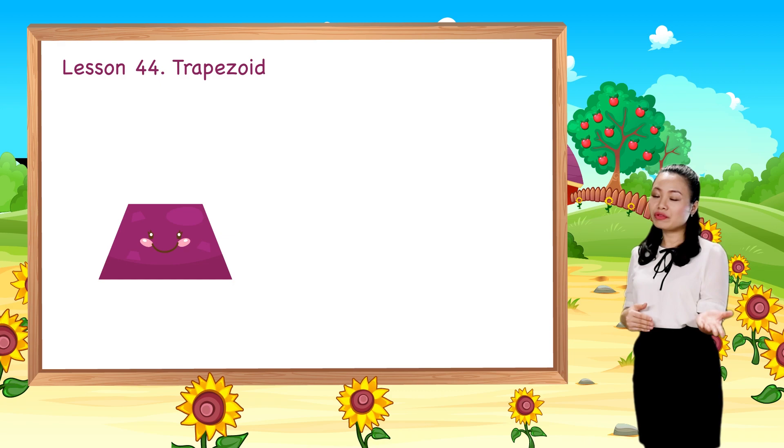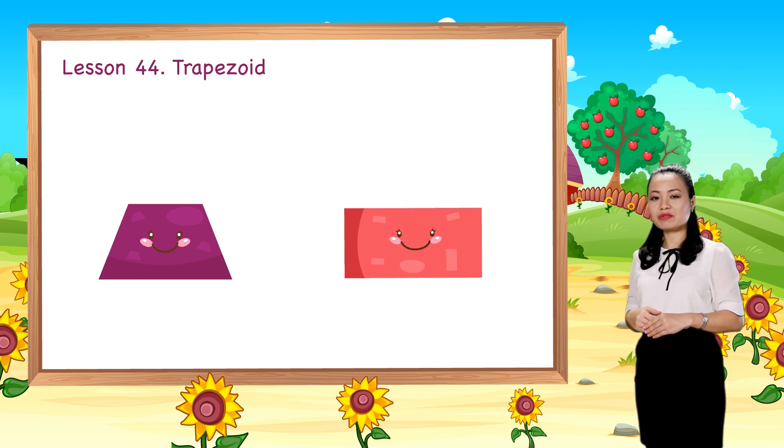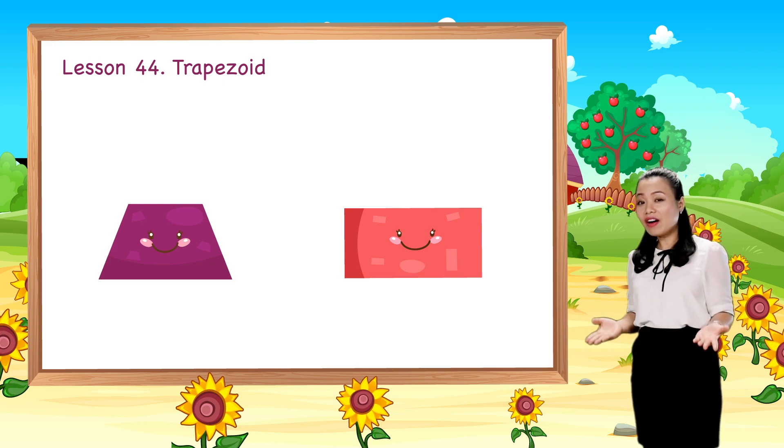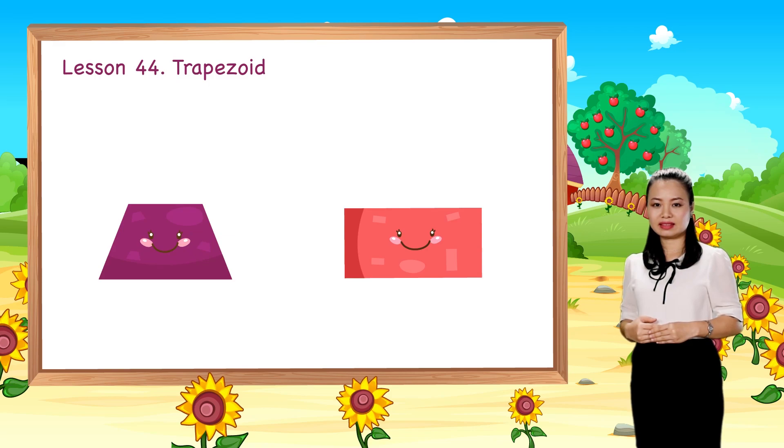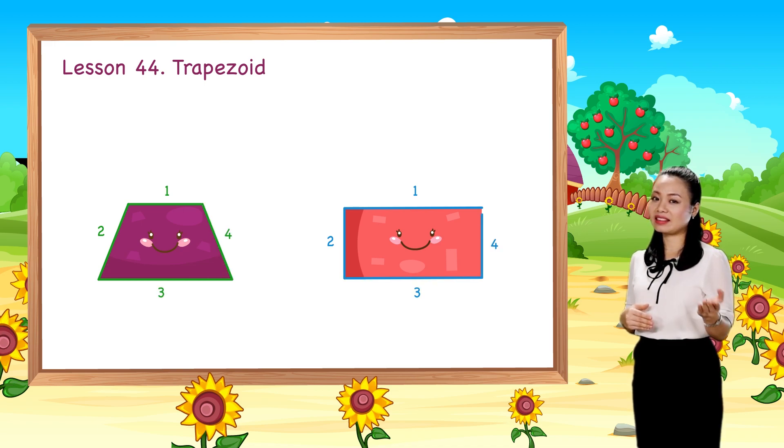Do you remember the rectangle we learned in lesson 42? How are they alike? Both the trapezoid and the rectangle have four straight sides and four corners.